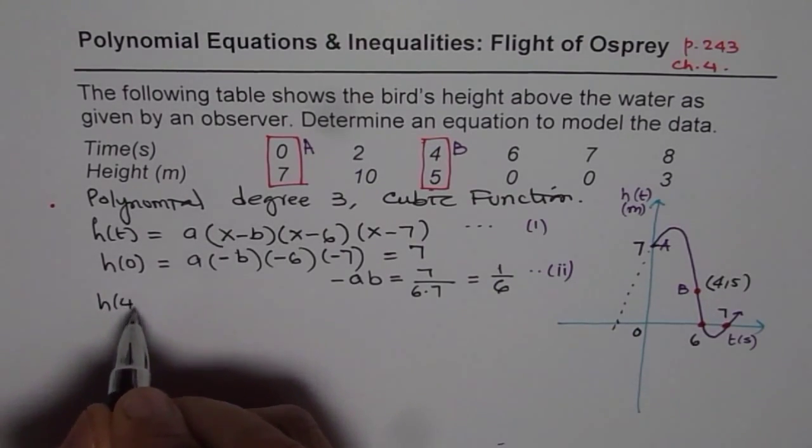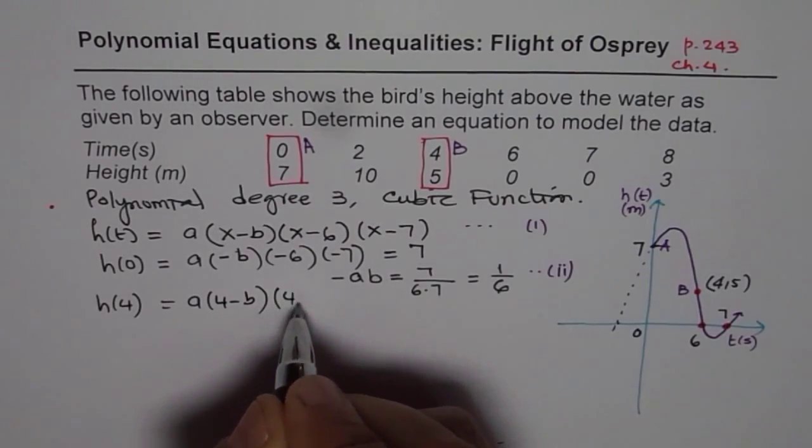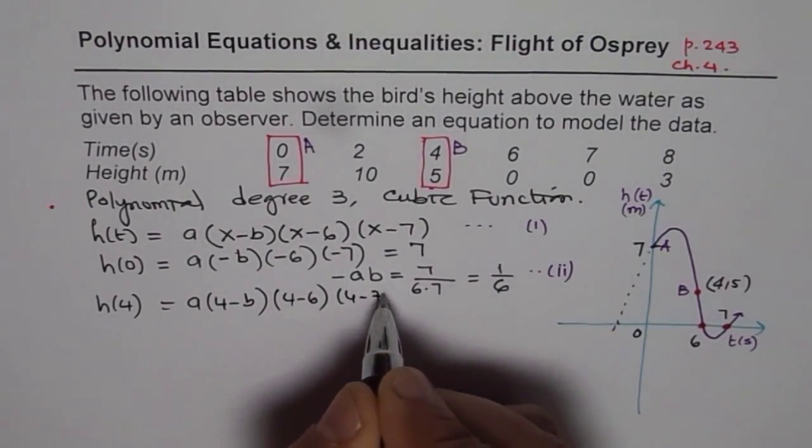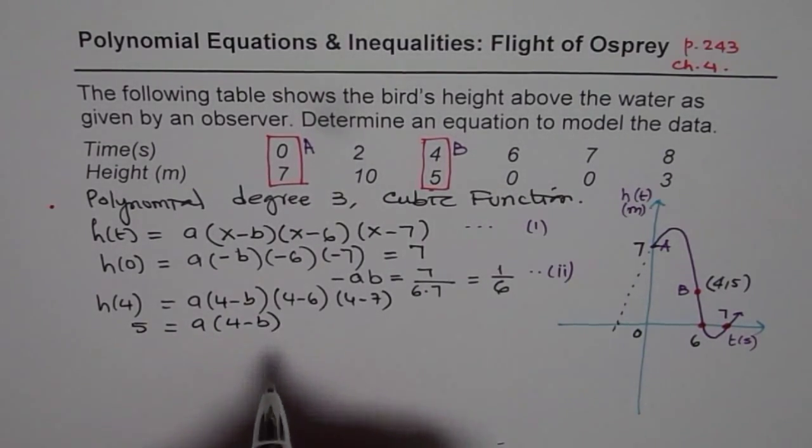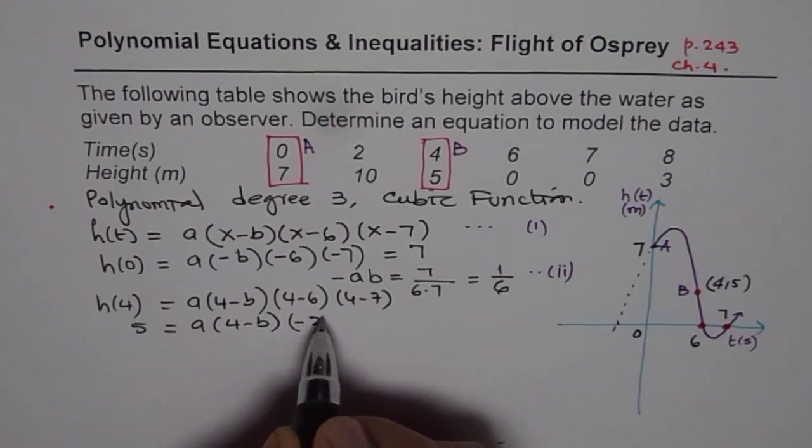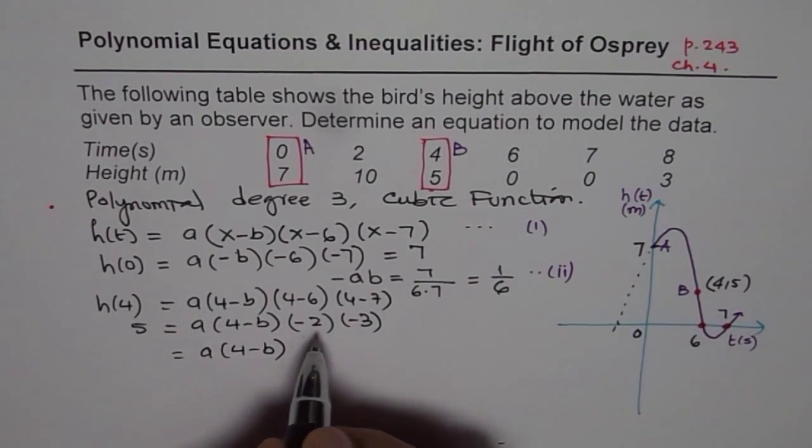Now I will substitute the second point 4 and 5. So height at T equals to 4 is 5. So let me substitute 4 here. A times 4 minus b, times 4 minus 6, times 4 minus 7, equals to, so at 4 the height is 5. So I have 5 equals to a times 4 minus b, 4 minus 6 is minus 2, 4 minus 7 is minus 3. So what I get here is a times 4 minus b equals to 3 times 2 is 6, 5 divided by 6.